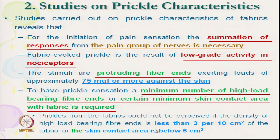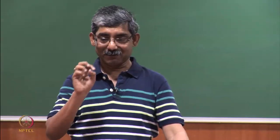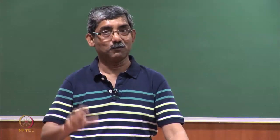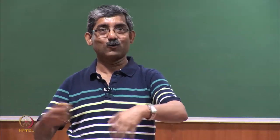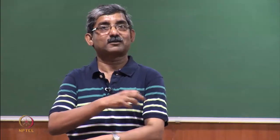The fibre density should be more than 3 fibres per 10 square centimetres. If it is less than 3 per 10 centimetres square, the prickliness of the fibre cannot be sensed. If there are only 1 or 2 fibres, it has been observed that you will not get prickle sensation, even if it is a harsh fibre.